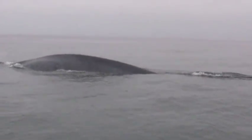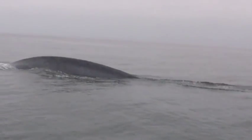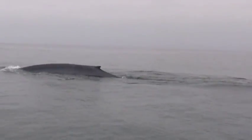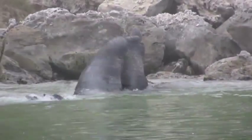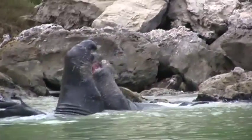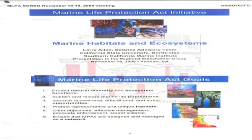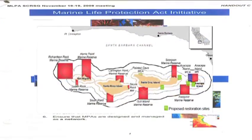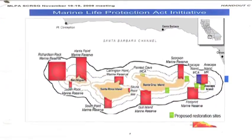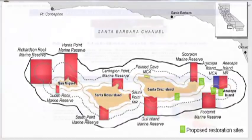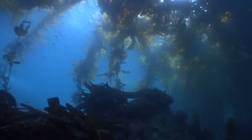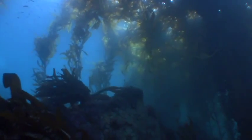The waters that run along the California coast are some of the most abundant and thriving near-shore ocean waters in the world. To protect these waters, the Marine Life Protection Act was passed by the California State Legislature in 1999. The Act mandates that a network of marine reserves be established to conserve biological diversity and the health of the marine ecosystem.